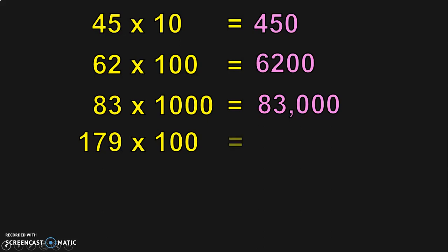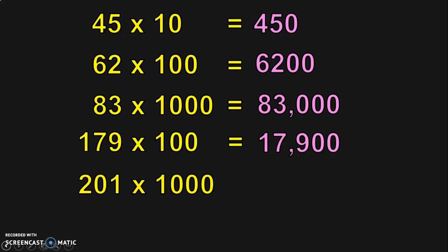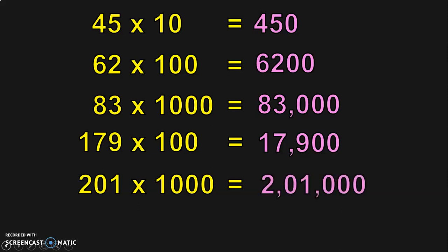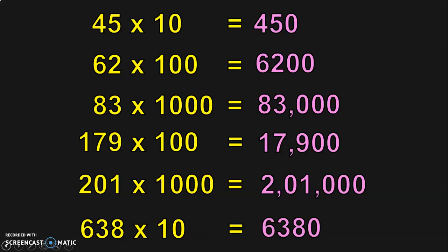Next, 179 into 100 — write down the 3-digit number 179 followed by two zeros. This is again a 5-digit number: 17,900. Next, 201 multiplied by 1,000 — 201 followed by three zeros makes it a 6-digit number, and the answer is 2,01,000. And the last sum: 638 multiplied by 10 — 638 followed by zero gives you 6,380.